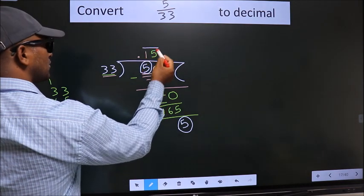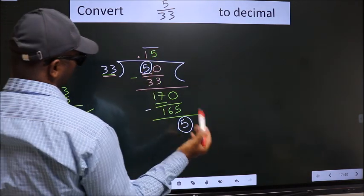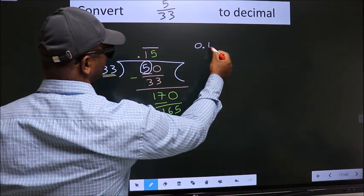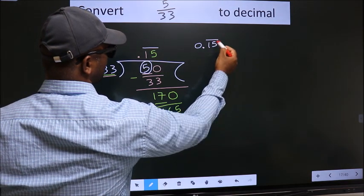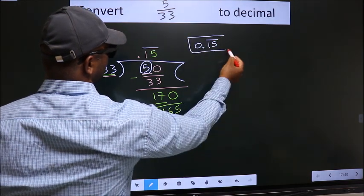That means we get a bar on these two numbers. Therefore, our answer is 0.15 with a bar on these two numbers. This is our answer.